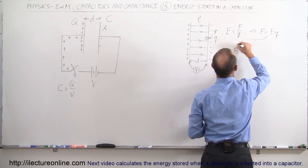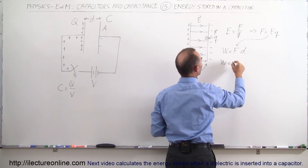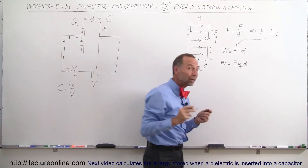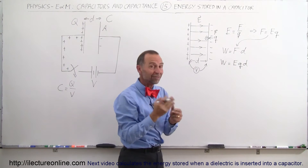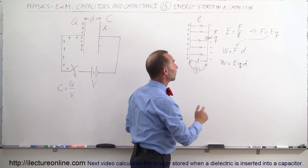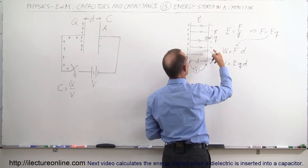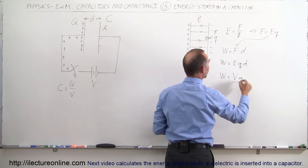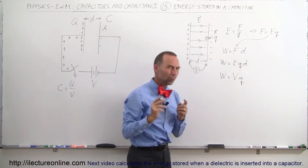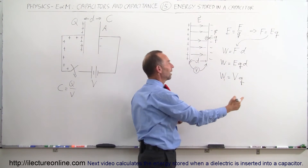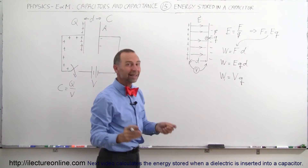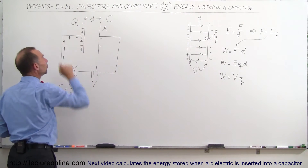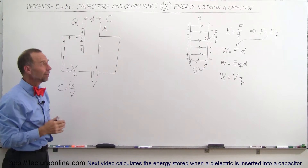So we can replace F in the work equation: the work done is equal to E times Q times D. And E times D is basically the potential difference between the plates. So the amount of work done to bring one charge across the capacitor is equal to the potential difference times Q. That's the work done to take one charge and move it across the capacitor plate — the same amount of work as it would take to add one more charge to the capacitor.